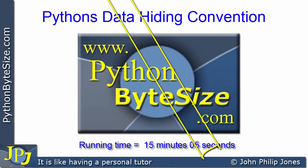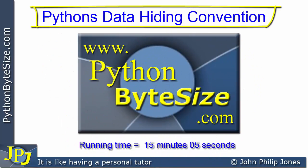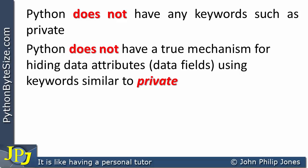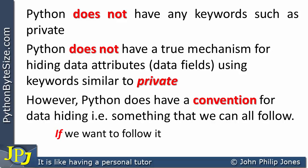In this video, we're going to have a look at a convention used when programming in Python that achieves something similar to data hiding. Python does not have any keywords such as private. Python does not have a true mechanism for hiding data attributes — in other words, data fields — using keywords similar to private. However, Python does have a convention for data hiding. By a convention, we mean something that we can all follow if we want to follow this particular convention.